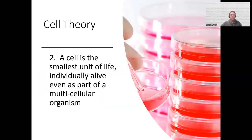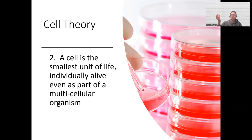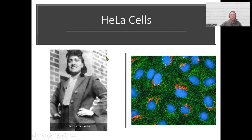The second part of cell theory: a cell is the smallest unit of life — individually alive even as part of a multicellular organism. You can take a cell out of your body, and if you feed it with nutrients it's able to grow on its own. If you leave it on the desk it will dry up and die, but if you give it nutrients — like those red solutions — it can thrive and may even divide.